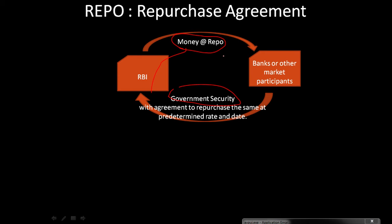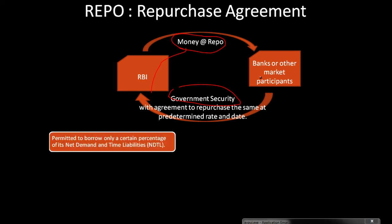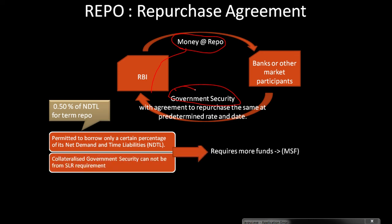Under the repo market, the bank collateralizes government securities with a repurchase obligation — meaning after a predetermined period and at a predetermined rate, the bank must repurchase those government securities. Banks cannot borrow unlimited amounts under the LAF window; there is a limit. Under the term repo market, the limit is 0.5% of NDTL — only that much money can a bank borrow from the RBI through the LAF window. Additionally, the government securities put as collateral cannot come from the bank's SLR requirement.